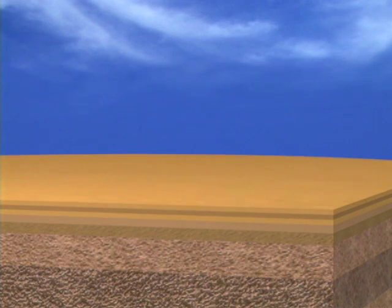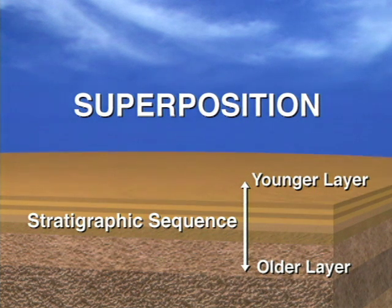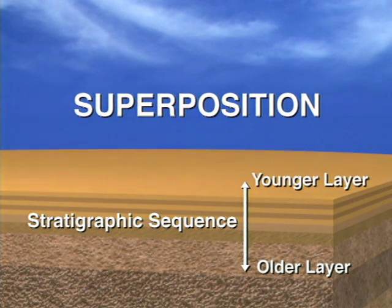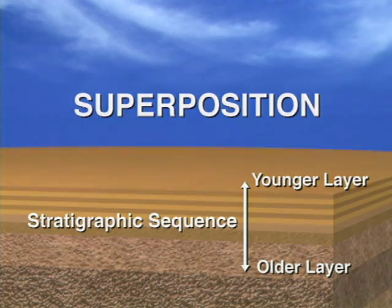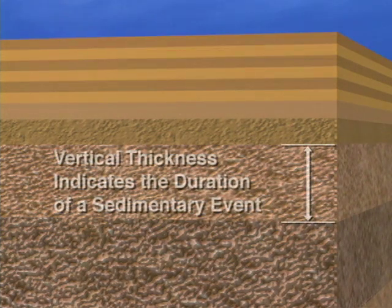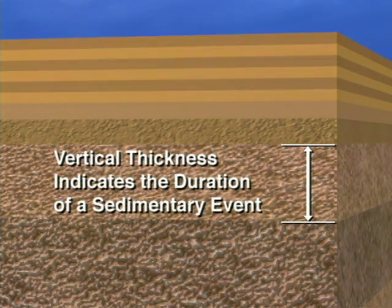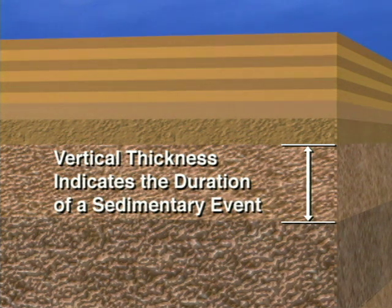When geologists examine the stratigraphic sequence, they can assume that due to the principle of superposition, each layer is younger than the one beneath it and older than the one above it. Vertical thickness is an indicator of the passage of time. Not only are the sedimentary events in order from bottom to top, but the thickness of sediment in each layer is an indicator of the length of time represented by the sequence.